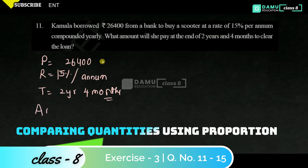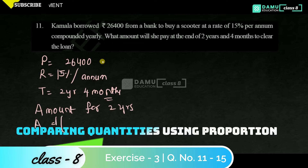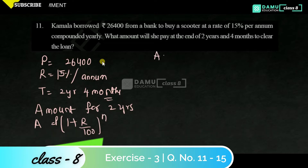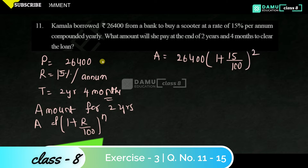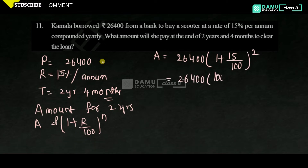Amount for 2 years: A = P × (1 + R/100)^n. So amount = 26,400 × (1 + 15/100)², which is 26,400 × (115/100)².